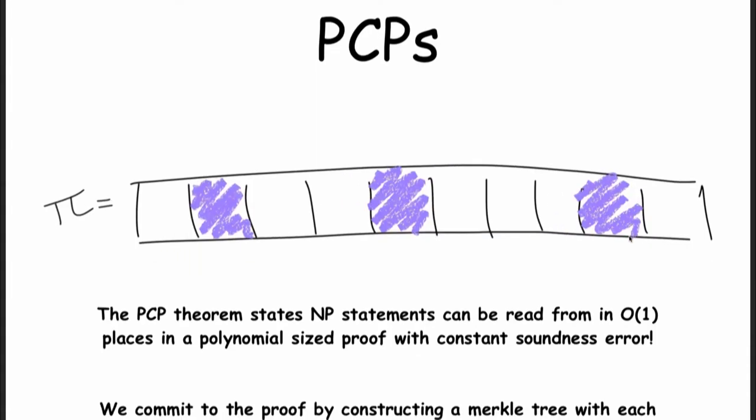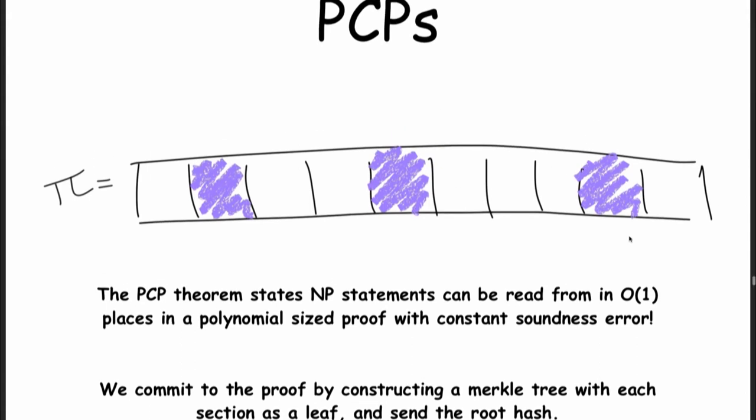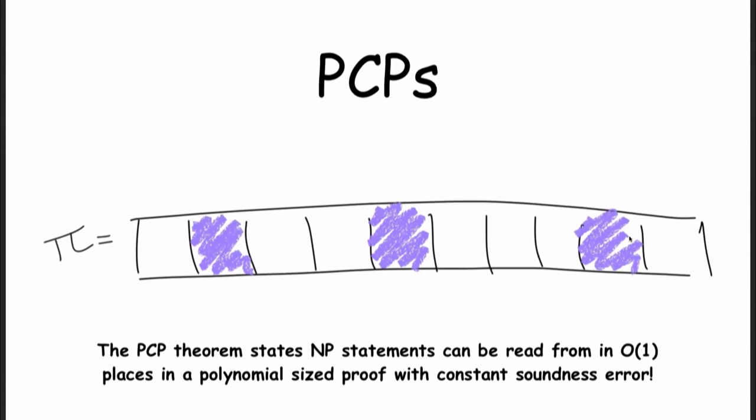A PCP is where you take different points in the proof, read those points, and then you have a convincing proof. But this proof has constant soundness error. In the cryptography world we want an extremely small soundness error — this could be anything under a half, some constant fraction. But we don't want to be convinced of a fake proof some constant amount of the time. So what we need to do is repeat this PCP theorem.